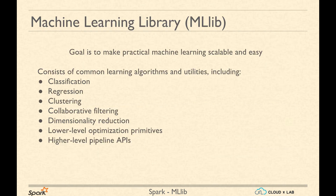Let us now understand MLlib. MLlib is a machine learning library or package of Apache Spark. The goal of this package is to make machine learning scalable and easy. This library has all common machine learning algorithms and utilities, including classification, regression, clustering, collaborative filtering, and dimensionality reduction. It also provides lower-level optimization primitives for creating our own algorithms.